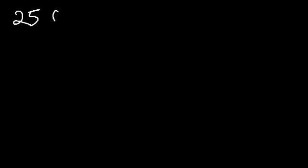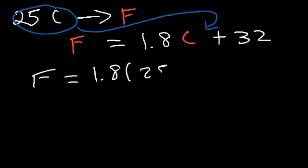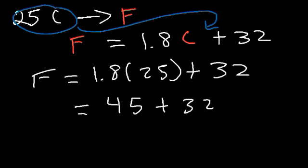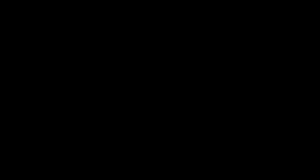Now convert the Celsius temperature to Fahrenheit using F = 1.8C + 32. Plug in 25 for C: 1.8 times 25 plus 32. 25 times 1.8 is 45, and 45 plus 32 is 77. So the temperature is 77 degrees Fahrenheit, equal to 25 degrees Celsius, which is 298 Kelvin.